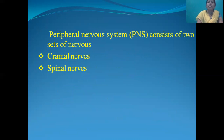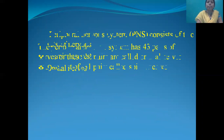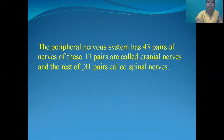The peripheral nervous system consists of 2 sets of nerves: cranial nerves and spinal nerves. The peripheral nervous system has 43 pairs of nerves. Of these, 12 pairs are called cranial nerves and the remaining 31 pairs are called spinal nerves.